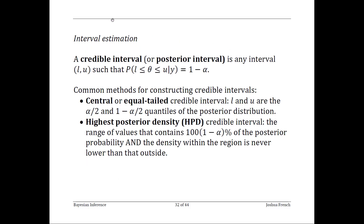A third approach for summarizing the posterior distribution is using interval estimators. In Bayesian statistics, we often use something known as a credible interval, or posterior interval, which is a range of values that contains the parameter with a specified posterior probability. A central credible interval with level 1 minus alpha is computed such that the area below and above the endpoints of the interval equal alpha over 2 — also known as an equal-tailed credible interval. A different approach is to construct the highest posterior density interval, or HPD interval, which starts at the posterior mode and extends the interval such that the density inside the interval is always at least as large as the density outside it.